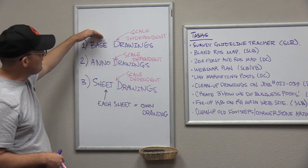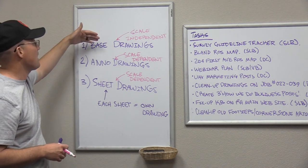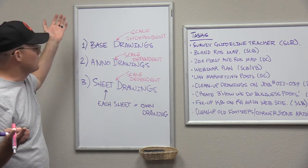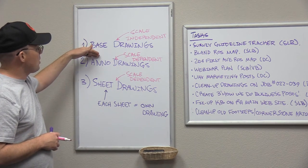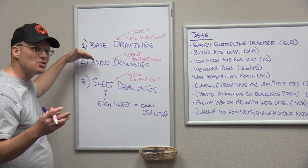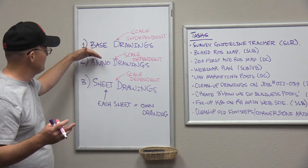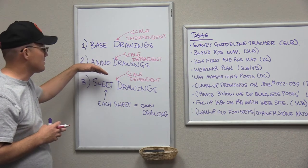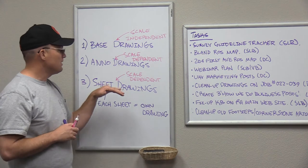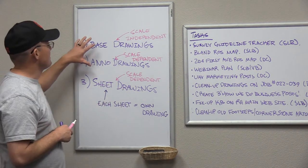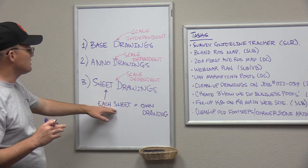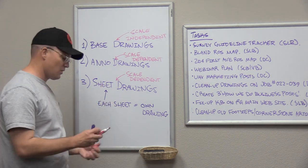The base drawing is essentially infinitely scrollable — it's not set up as a sheet and doesn't have a particular scale; you can scroll it to the edge of the mapping limits. Annotation drawings are set up at a particular scale but are also scrollable to the edge of the mapping limits. Sheet drawings, on the other hand, only contain content related to the footprint of that particular sheet. As a general rule, unique content in the sheet drawing lives in the paper space tab.